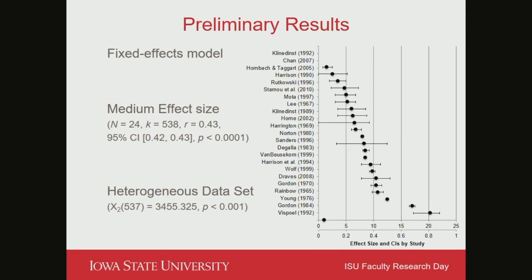This is still in-process research. I used a fixed effects model using syntax by Andy Fields — eventually I'll move into R, but right now that's what I'm using. I found a medium effect size. We can see there is a correlation between music aptitude and music achievement, which makes sense — the potential for music achievement correlates with music achievement. That's pretty obvious. So far I've got about 24 studies. With my initial meta-analysis, I excluded all dissertations, because that seems to be where we are most guilty of using music aptitude measures for anything in music education research.